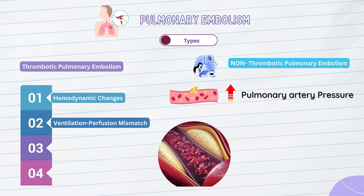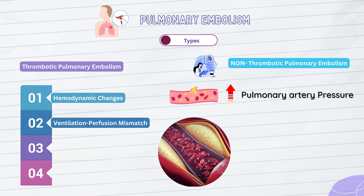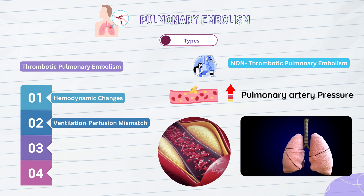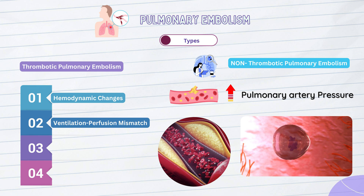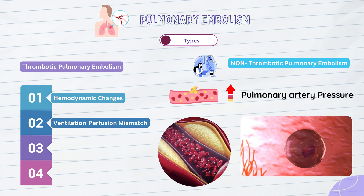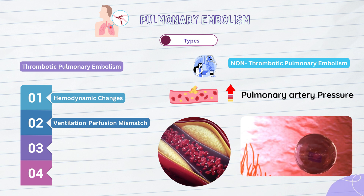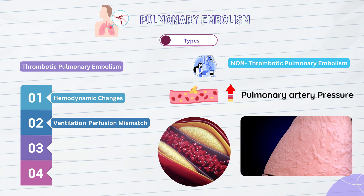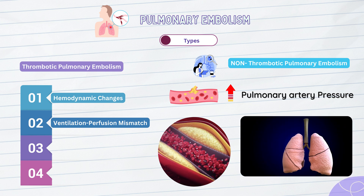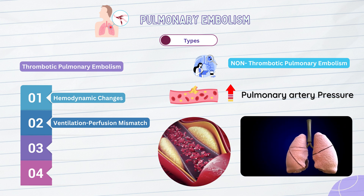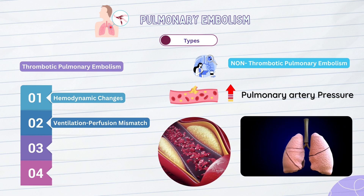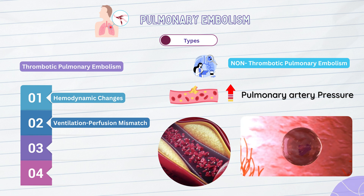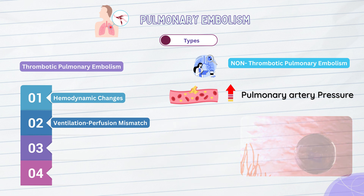Ventilation-perfusion mismatch: when a pulmonary artery is blocked, the affected lung area receives less blood supply. This results in a ventilation-perfusion mismatch, meaning that air and blood flow within the lung are not optimally matched. As a result, impaired gas exchange occurs, leading to decreased oxygenation of the blood and subsequent hypoxemia.